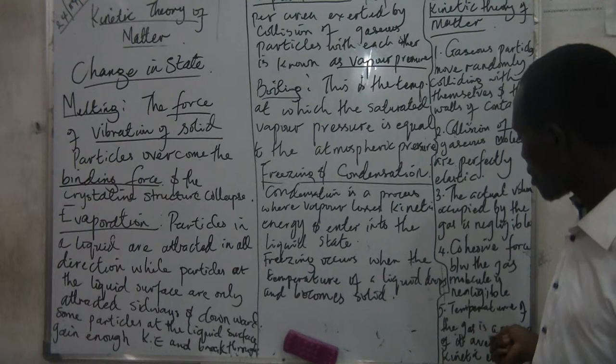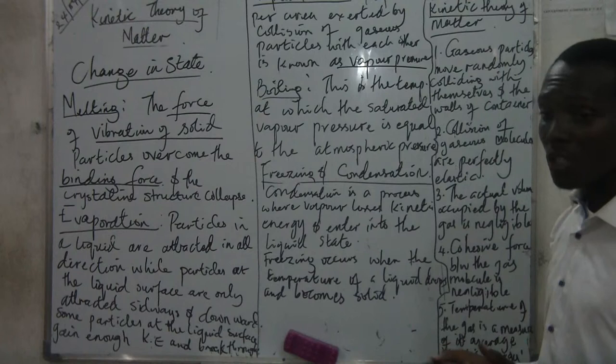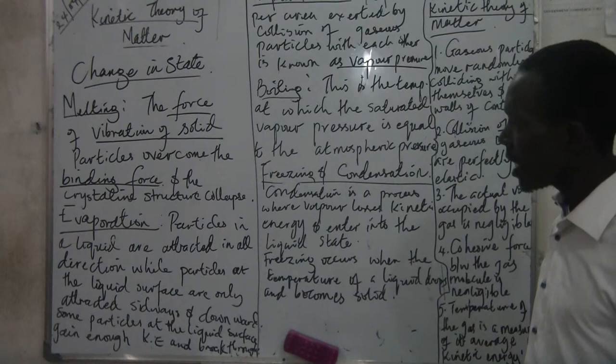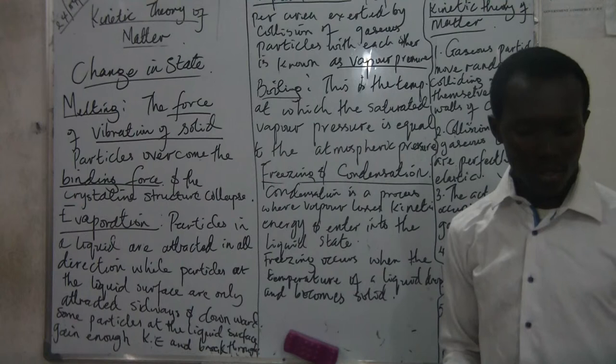Lastly, the temperature of the gas is a measure of its average kinetic energy. For the assumption of kinetic theory of matter to be complete, the temperature of the gas should be a measure of its average kinetic energy. The next thing we are going to look at is the gas laws that govern kinetic gas theory.